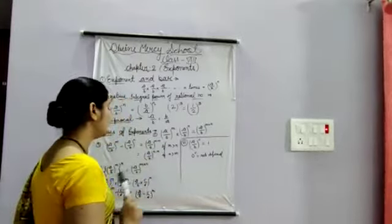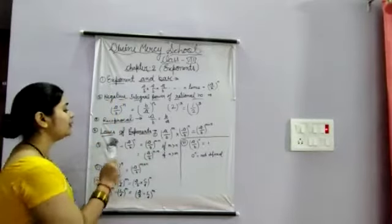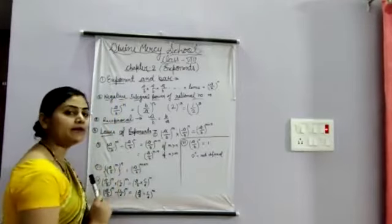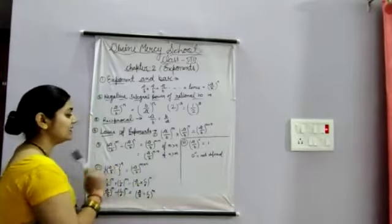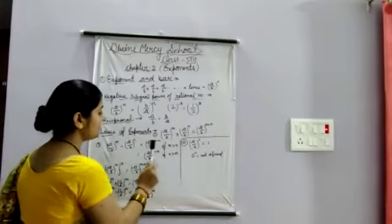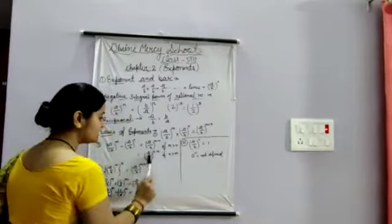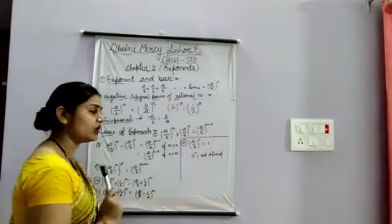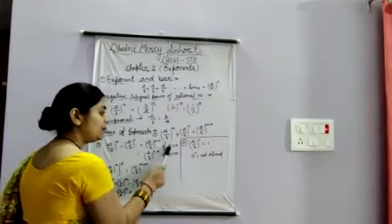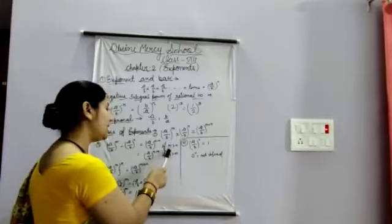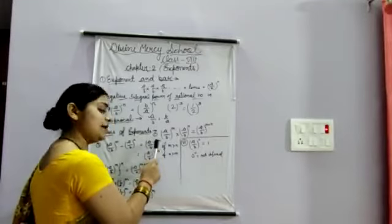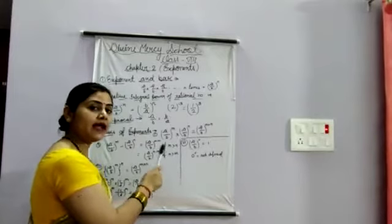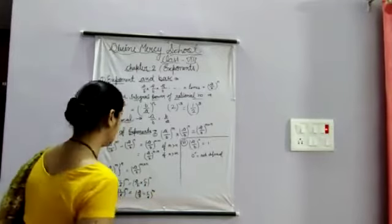For example, if we have A upon B to the power 4 divided by A upon B to the power 5, then since 5 is greater than 4, we subtract 5 minus 4. If M is greater than N, we write M minus N; if N is greater than M, we write N minus M.